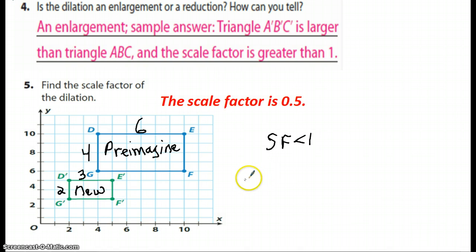So, setting this up, I have the new over the original. So, I have two over four, which is reduced to one half, or as a decimal, zero point five.